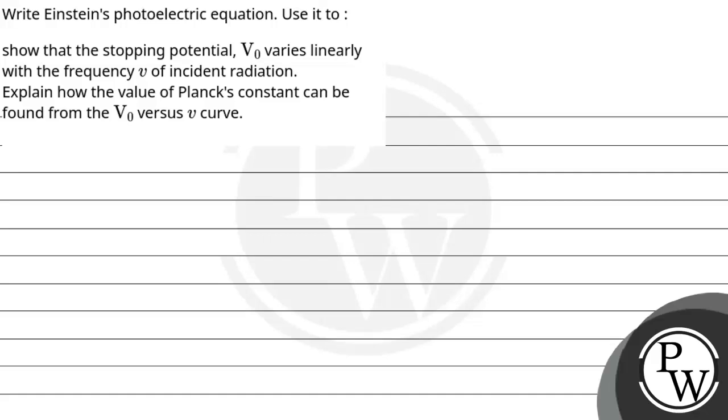Hello! Let's see the question. The question says: write Einstein's photoelectric equation, use it to show that the stopping potential V₀ varies linearly with the frequency of incident radiation, and explain how the value of Planck's constant can be found from the V₀ versus ν graph. Okay, so for this question, our key concept is...